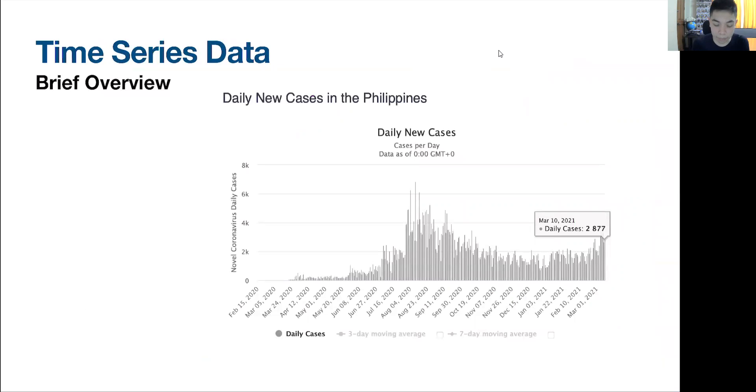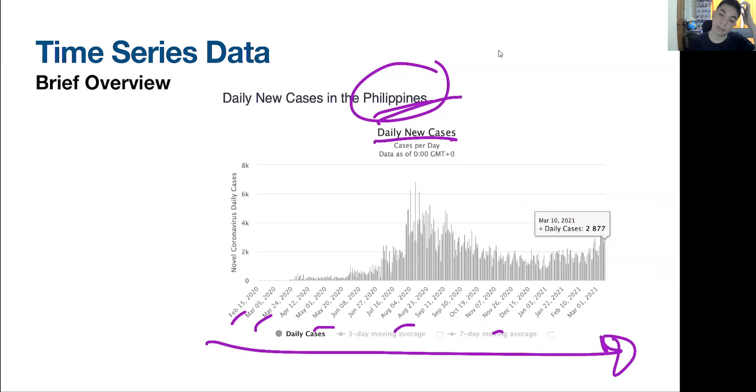For example, this is how a typical time series would look like. We have it as daily new cases, how many new COVID cases there are in a particular state, in this case, for the Philippines. So, we have daily new cases. As a time series, you have your multiple time periods, but then it's just one entity, which is the Philippines. That's a time series data.